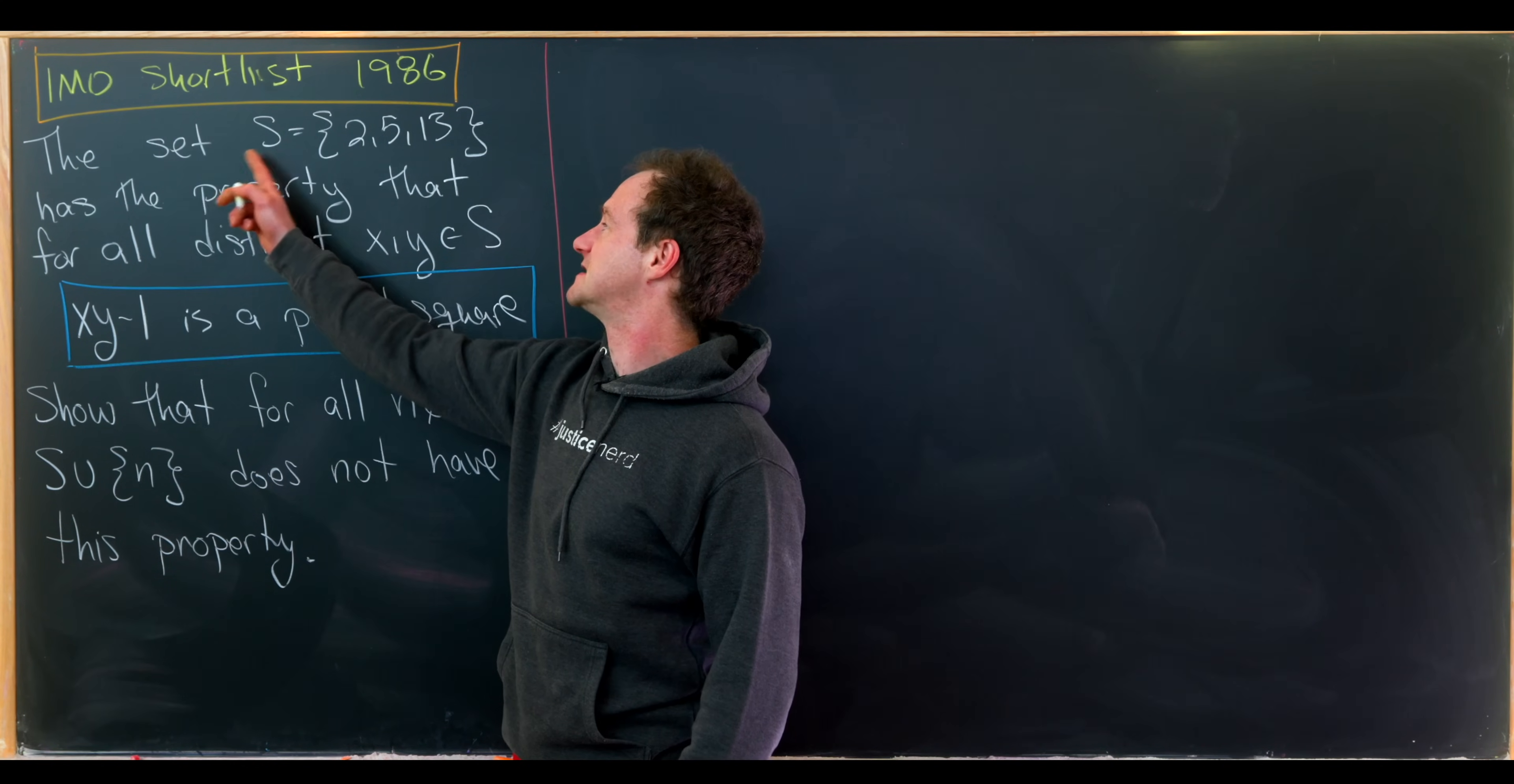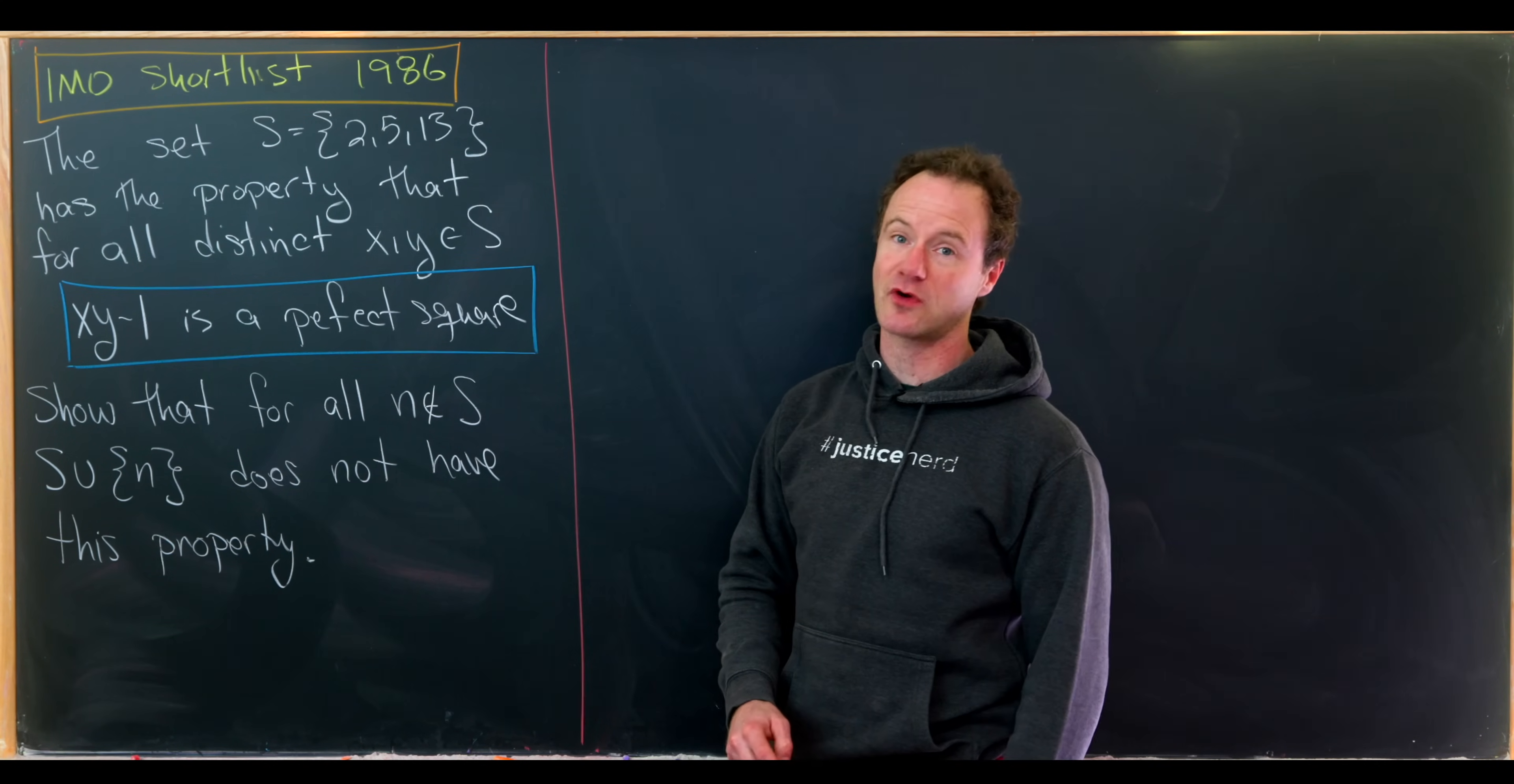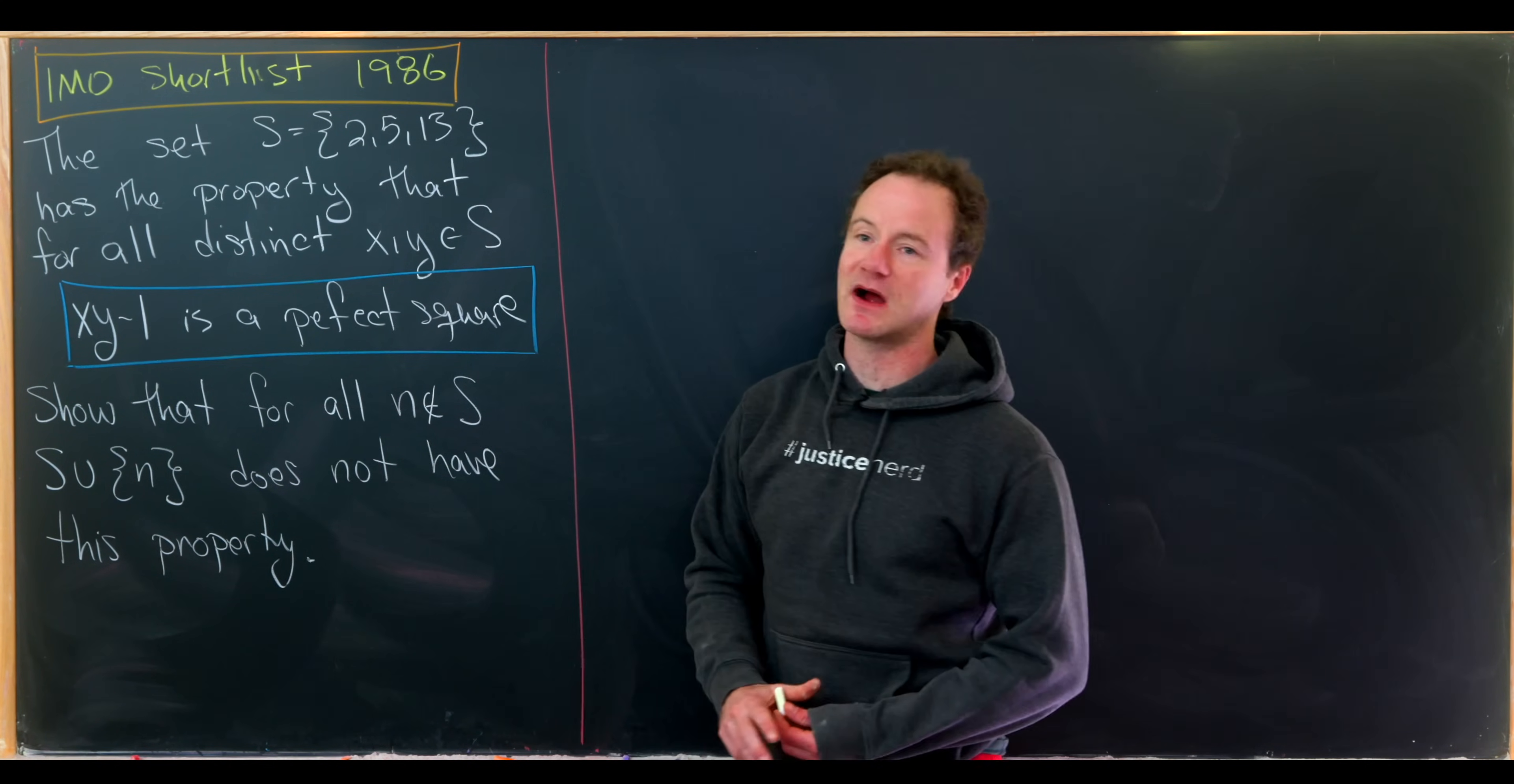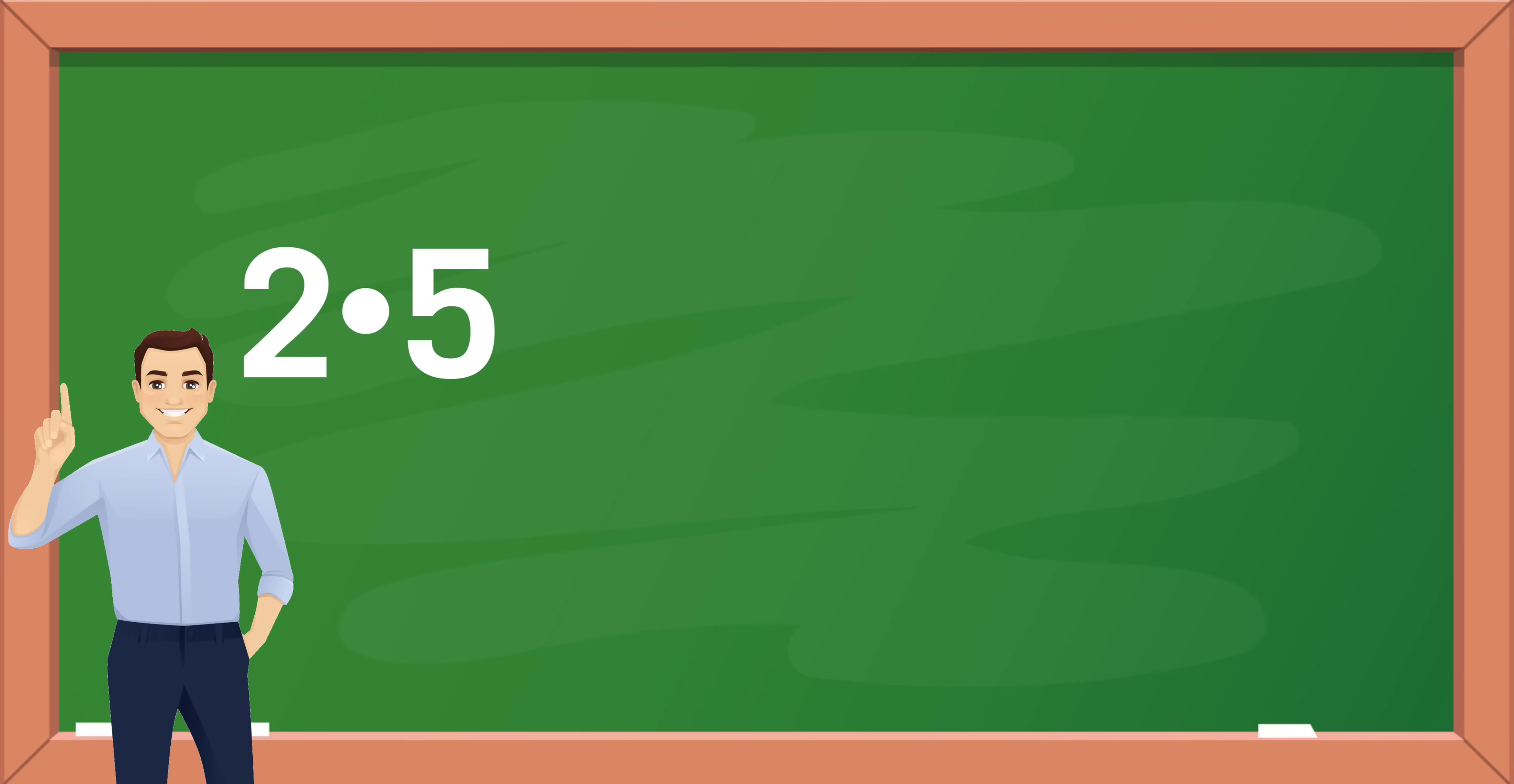Let's notice that the set S, which is the set containing 2, 5, and 13, has the property that if you take two distinct elements from S, which I'll call x and y, and you form x times y minus 1, you get a perfect square. So let's just notice that 2 times 5 minus 1 is 10 minus 1, which is 9. That's a perfect square, 3 squared.